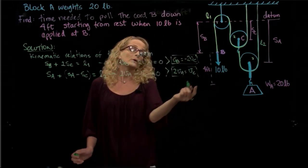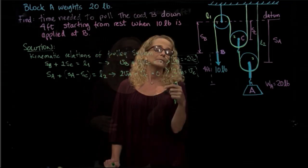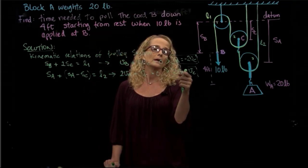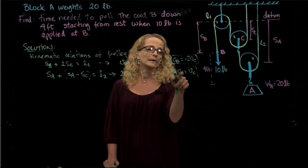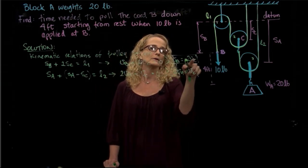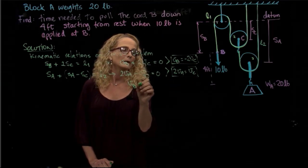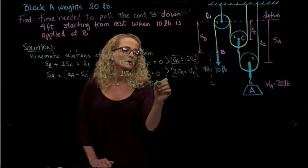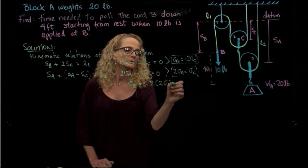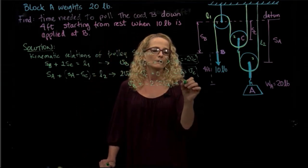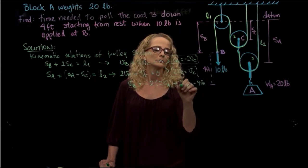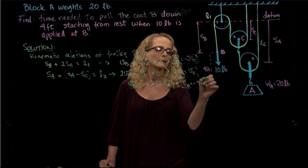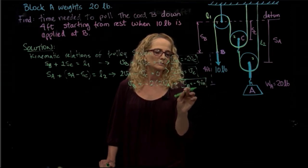From those two equations, I can find a third relation that relates velocity of A and velocity of B. If I substitute velocity of C into the first equation, I get that velocity of B equals negative four times velocity of A. So my third kinematic relation is: velocity of B equals negative four times velocity of A.